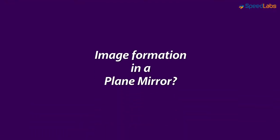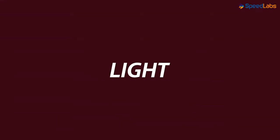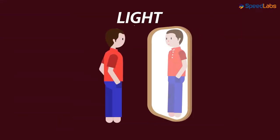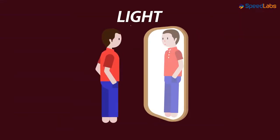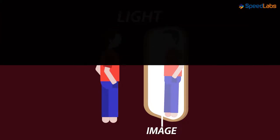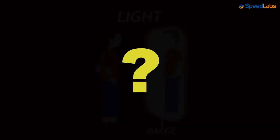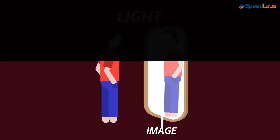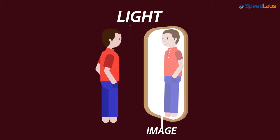How is the image formed in a plane mirror? The answer is light. When we stand in front of a mirror, we see our image. Will we be able to see our image in the dark? Not really — we would need light for that. We will discuss this point in greater detail in our next video.